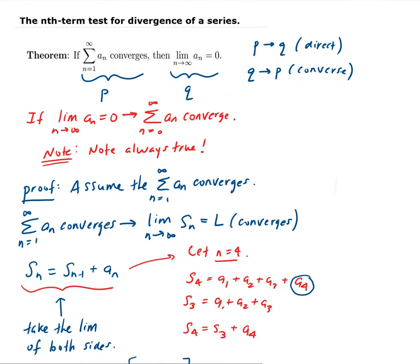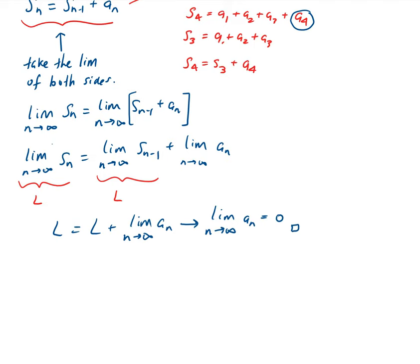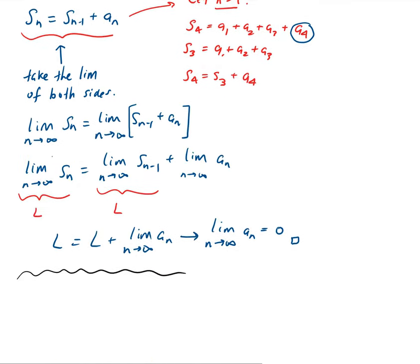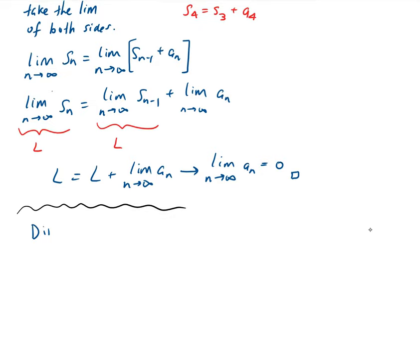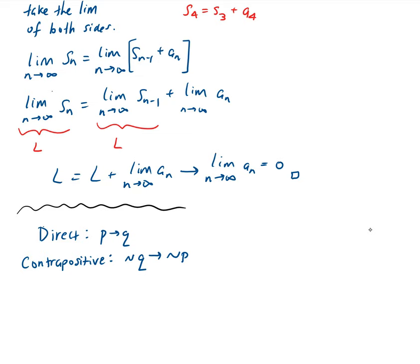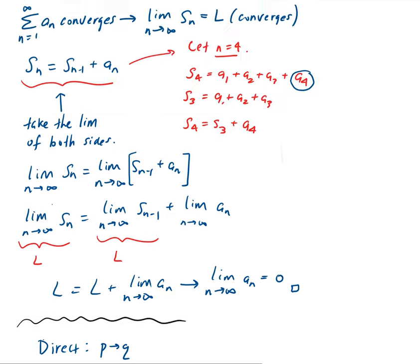Now that we have this theorem, we can talk about the nth term test for divergence of a series. To discuss this, we need to talk about the contrapositive statement. Remember, we have the direct statement P implies Q, and then we have the contrapositive, which is not Q implies not P — the negation of Q implies the negation of P.